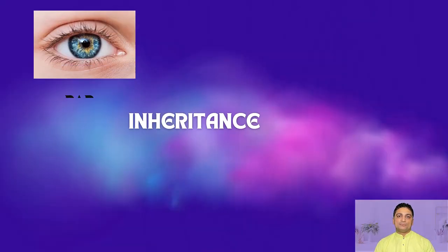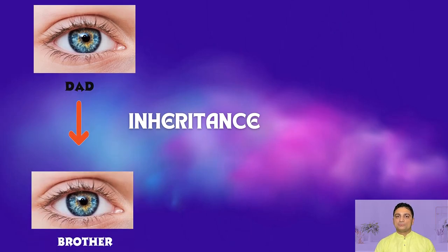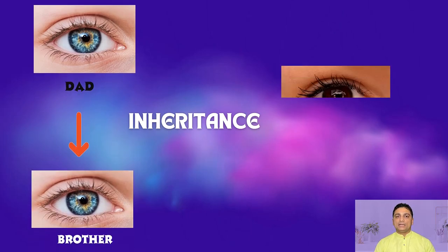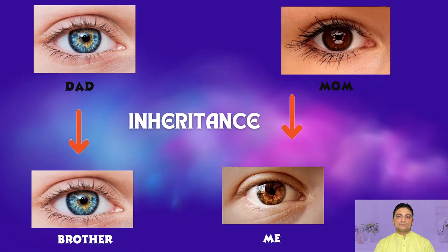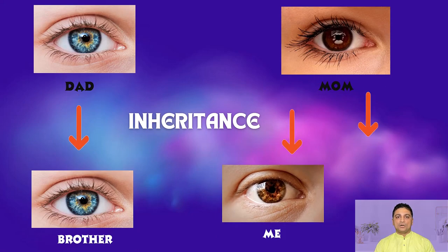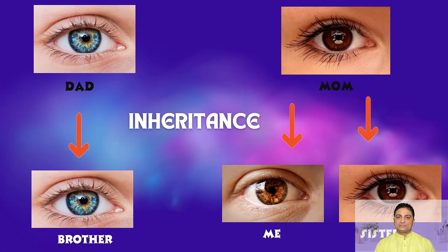Now let's talk about inheritance. Inheritance is the genetic process in which traits from parents are passed to their offspring through the transmission of genetic information. In the previous example of eye color, the blue eye color is passed from dad to your brother, and the brown eye color is passed from your mom to you and your sister. This is called inheritance.